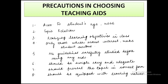Now, precautions for choosing teaching aids: they should be according to the student's age and need in the classroom. They should be relevant to the topic and should help realize the learning objective. Teaching aids should only be those which arouse interest and make students curious. Before using any kind of teaching aid, all guidelines should be carefully studied by the teacher — this is very mandatory, because if a teacher doesn't know how to use the aid, they cannot effectively teach with it in the classroom.